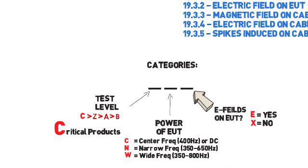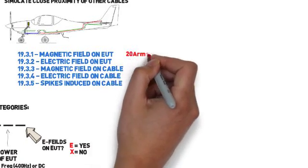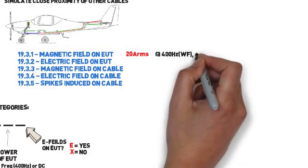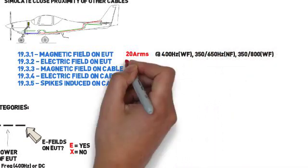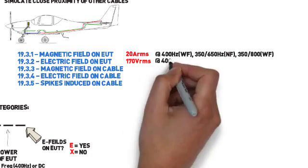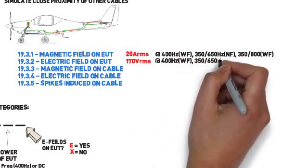The test level for magnetic fields is run at 20 amps regardless of your category, with the frequency determined by the second letter of your category. Electric fields is run at 170 volts regardless of your category, again with the frequency determined by the second letter.